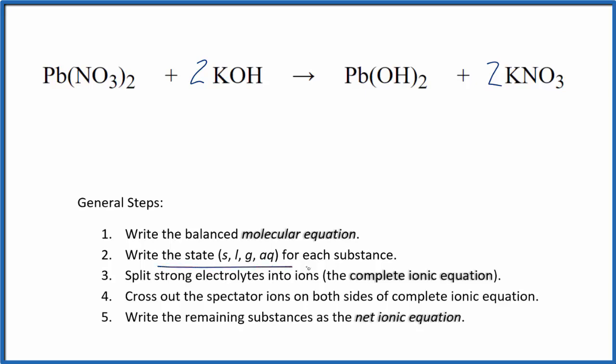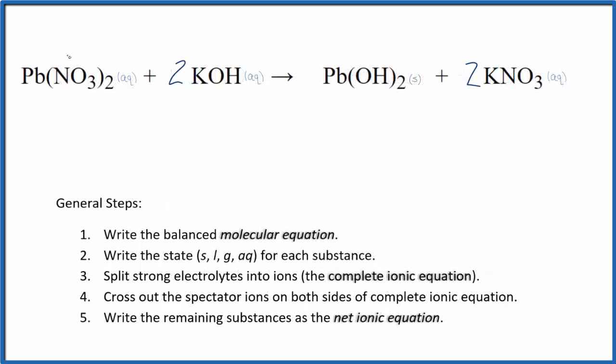Now we write the states for each substance. That'll look like this. If you know your solubility rules, nitrates are very soluble, and then potassium compounds are also very soluble. Potassium hydroxide, that's a strong base, so that's going to be soluble, dissociate into its ions.